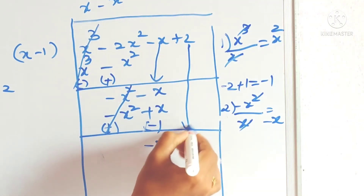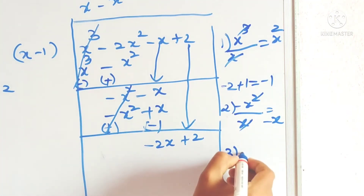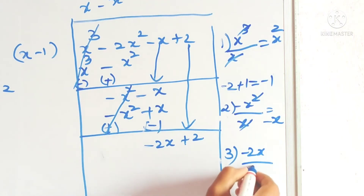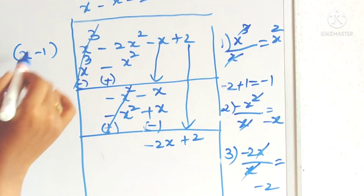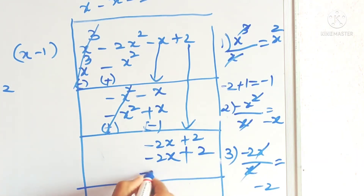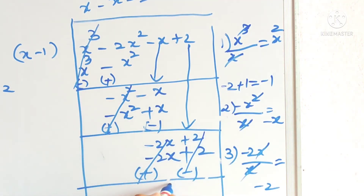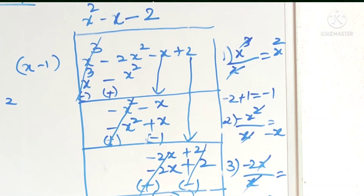Bring down the next term — it is plus 2. For the third term in the quotient, take the first term and divide by the first term of the divisor: x and x cancel, giving minus 2. Write minus 2 in the quotient. x into minus 2 is minus 2x, minus into minus is plus, 1 into 2. Change the signs again — same numbers cancel, and the remainder is 0. The quotient we got is x square minus x minus 2.